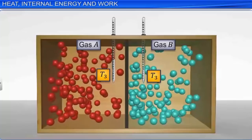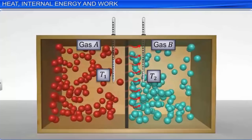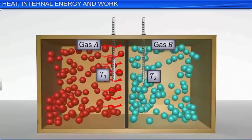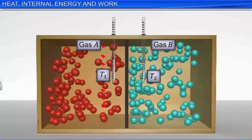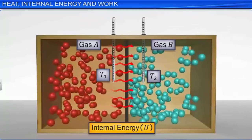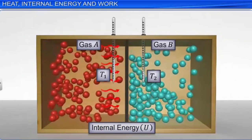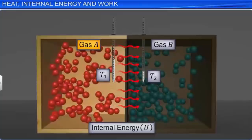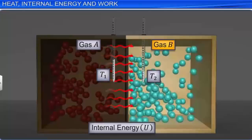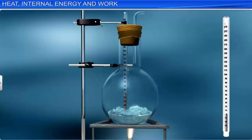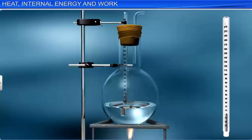An important point about heat is that it is energy in transit—it exists as a flow only. A question like 'how much heat does a sample of gas contain' has no meaning. In thermodynamics, the energy possessed by a system is internal energy, usually denoted by U. The internal energy changes when a system emits or absorbs heat energy. For example, ice at 0°C converts to water at 0°C by absorbing heat energy. Though there is no change in temperature, the internal energy of ice increases when it is converted to water.